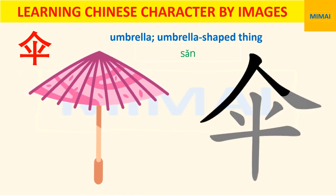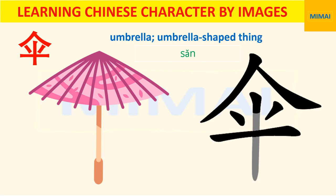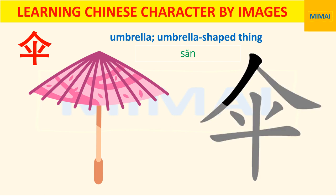To remember this word, listen and write after that. Umbrella. Umbrella Shaped Thing. 伞 — Umbrella. Umbrella Shaped Thing.